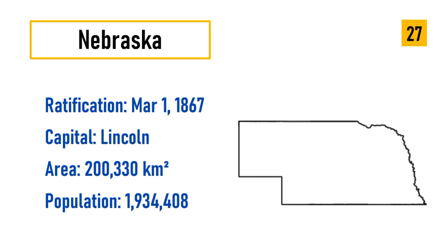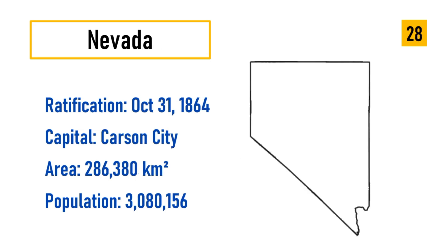Number 27: Nebraska, ratification March 1, 1867, capital Lincoln, area 200,330 square kilometers, population 1,934,408. Number 28: Nevada, ratification October 31, 1864, capital Carson City, area 286,380 square kilometers, population 3,080,156.